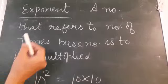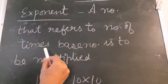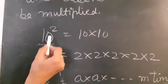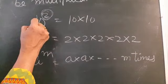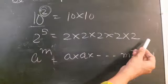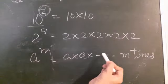What is the exponent? It is a number that refers to the number of times the base number is to be multiplied. For example, 10 raised to power 2 represents how many times the base is multiplied. So 10 raised to power 2 means 10 is multiplied 2 times. 2 raised to power 5 means 2 is multiplied 5 times. Similarly, a raised to power 2 means a is multiplied 2 times.